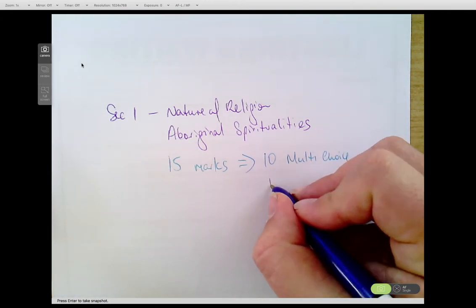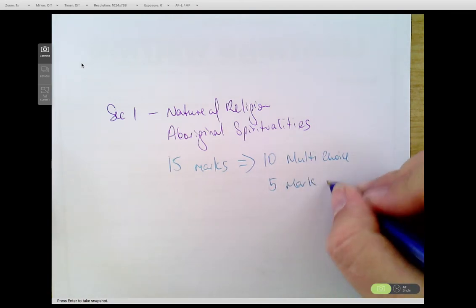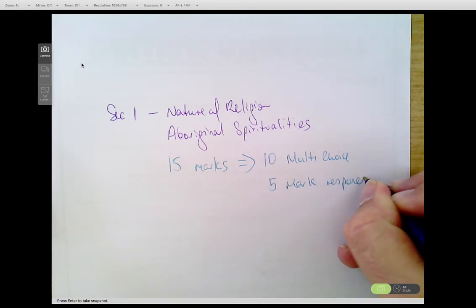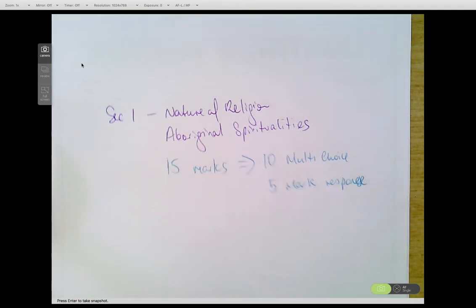That 5-mark response is the same type of task as what you did in the very first task of the year. So you may be given a stimulus and then a question and then you have to write the response. It could be just a simple question and then you write the response. It could be on either Aboriginal Spiritualities or the Nature of the Dream.